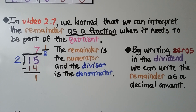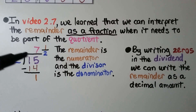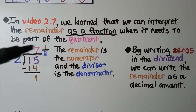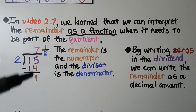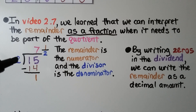In video 2.7, which is linked in the description, we learned that we can interpret the remainder as a fraction when it needs to be part of the quotient. Here we have 15 divided by 2. Two fits into 15 seven times because 2 times 7 is 14. We subtract and get a one as a remainder. This one will be the numerator and the divisor will be the denominator. By writing zeros in the dividend, we can write the remainder as a decimal amount.